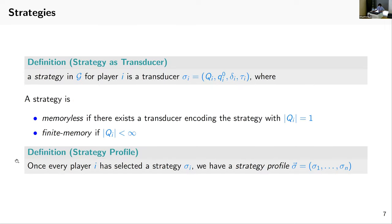A strategy for player i is given by a transducer. We say that a strategy is memoryless if there is a transducer encoding the strategy with the number of states equal to one. We say it's finite memory if the number of states is strictly smaller than infinity. Once every player has selected a strategy, we have what we call a strategy profile σ.